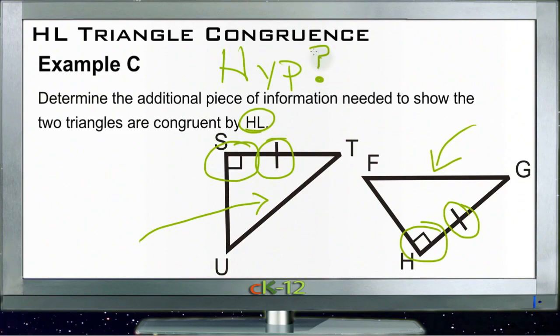If the hypotenuse of each triangle is congruent, then the two triangles are congruent. That's it — if the hypotenuse of each triangle is congruent to the other, then the two triangles are congruent.